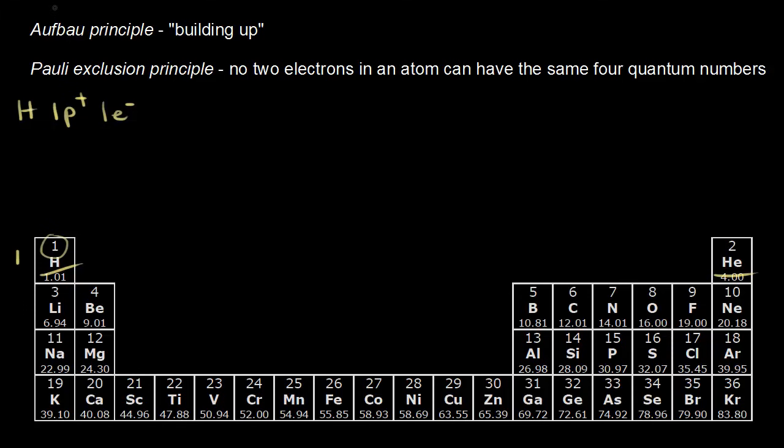We're going to use the Aufbau principle. Aufbau is German for 'building up,' because as you write electron configurations, you're thinking about the best way to build up an atom — where to put your electrons. Here we have only one electron to worry about, so where's the best place to put the one electron for hydrogen?